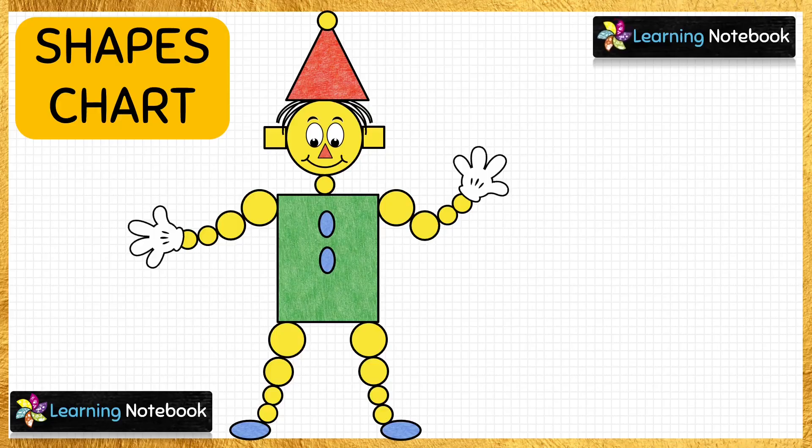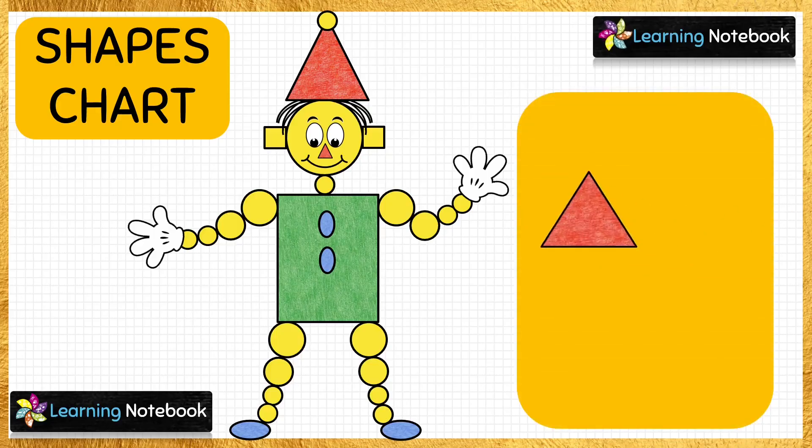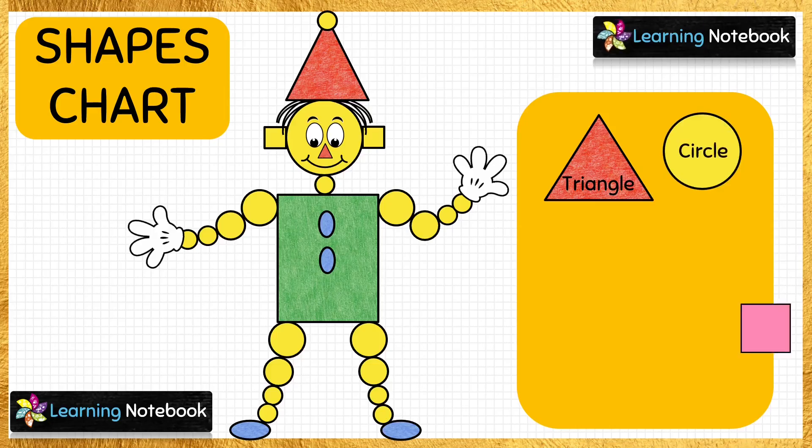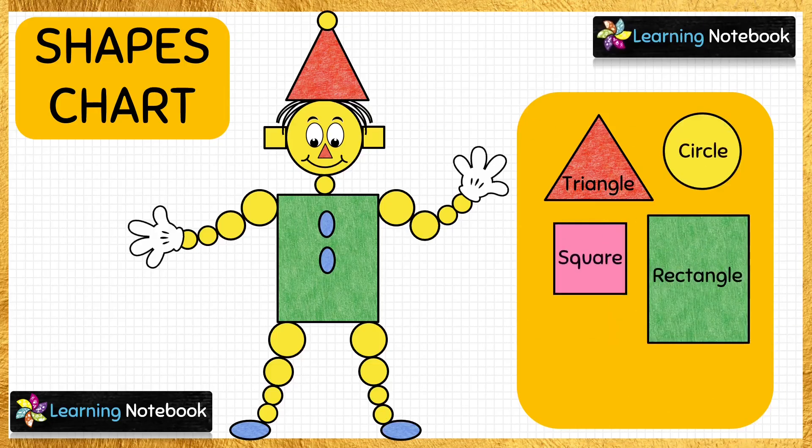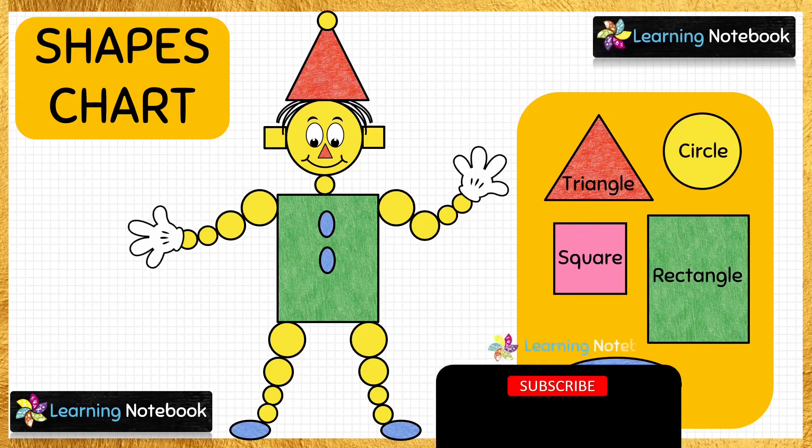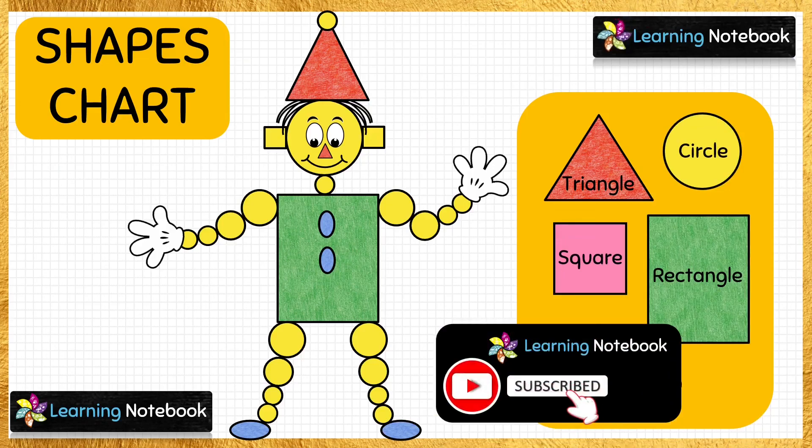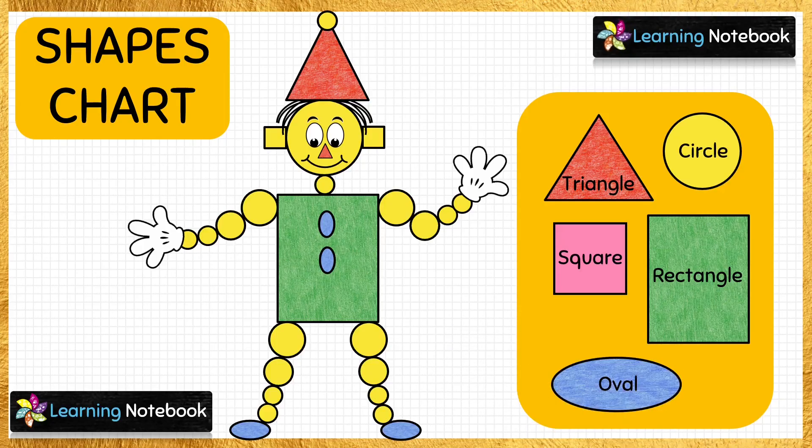So on the right hand side, let's make a legend and write all the shapes we have used to make this beautiful joker: triangle, circle, square, rectangle, and oval. So students, do try this creative and interesting art integrated activity to learn basic shapes in a fun way. Thanks for watching.